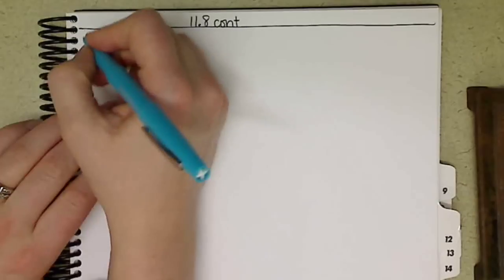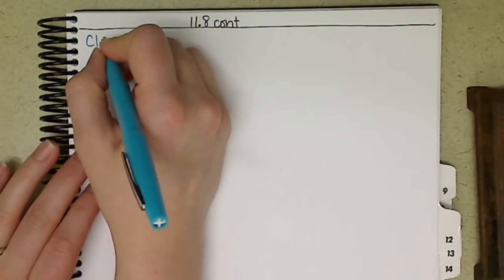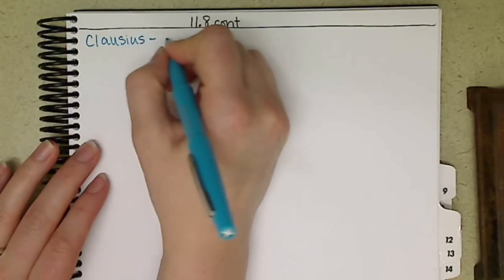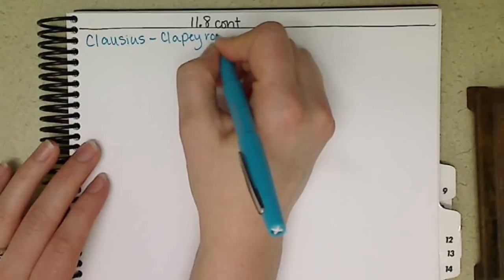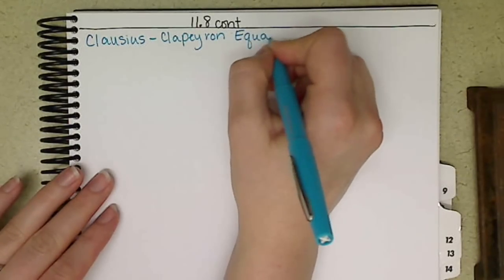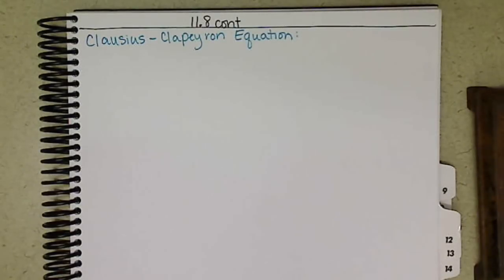So this video is covering the Clausius-Clapeyron equation. And this equation looks at our pressure compared to the delta H of vaporization of a substance.